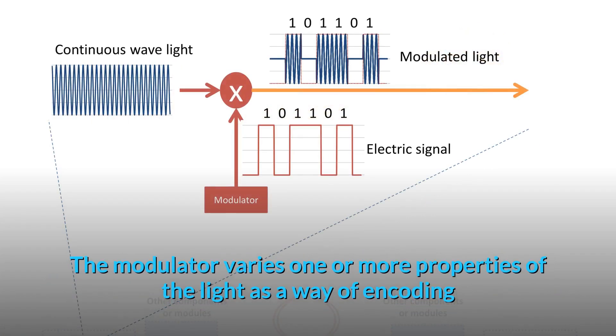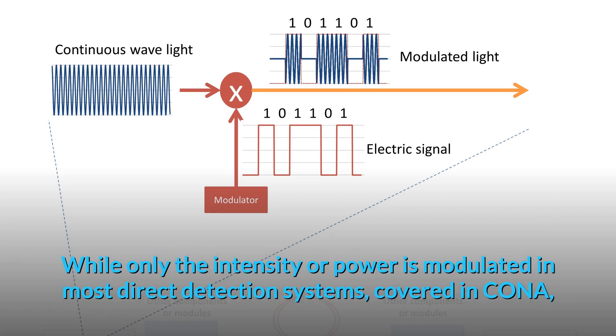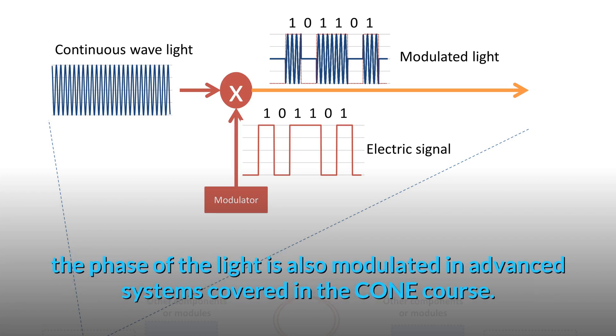The modulator varies one or more properties of the light as a way of encoding the digital signal onto the light waves before transmission. While only the intensity of power is modulated in most direct detection systems covered in Kona, the phase of the light is also modulated in advanced systems covered in the Kone course.